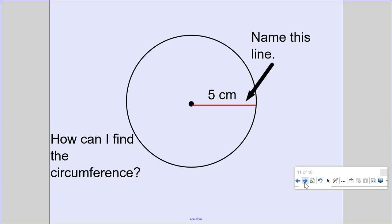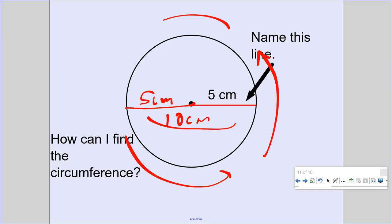So this line is called a radius. Two radius makes a diameter. So the diameter is 10 centimeters. 1, 2, 3. So about 30-ish, a little more than 30. If you want to know more accurate, it's about 31.4 centimeters. So this is the study of circumference, diameter, and radius.